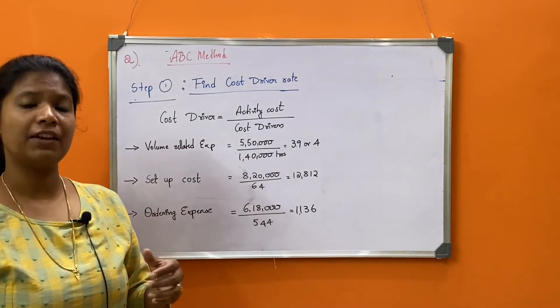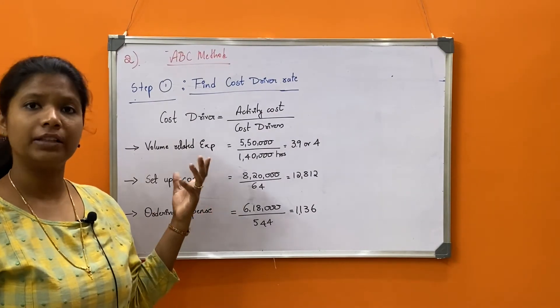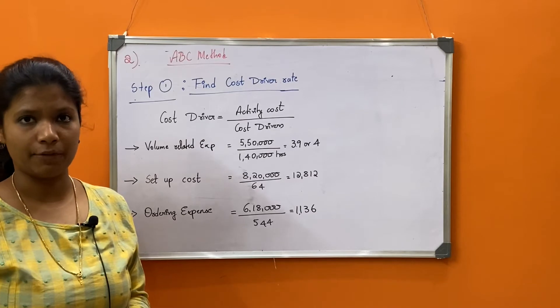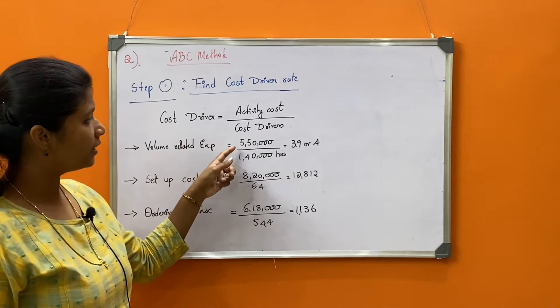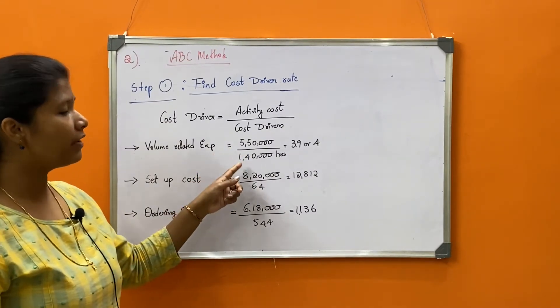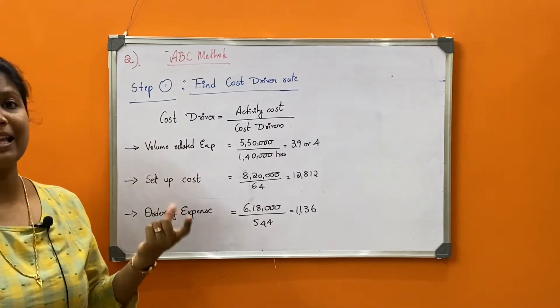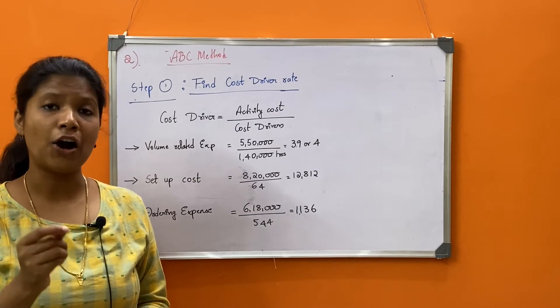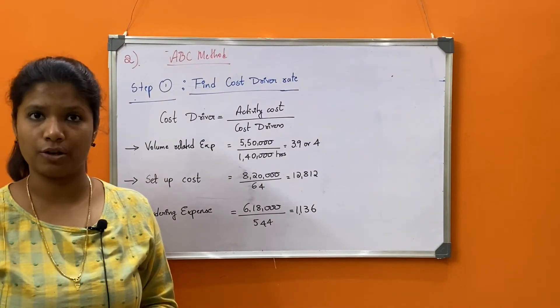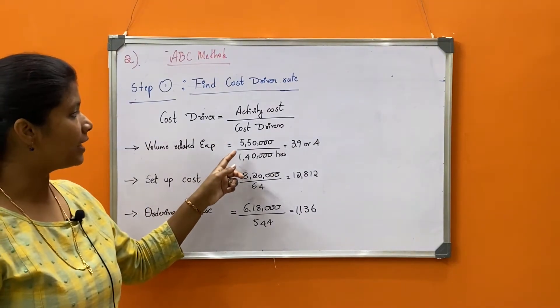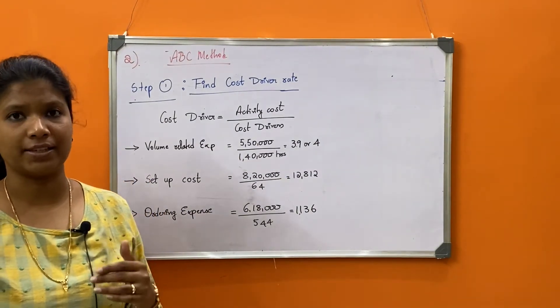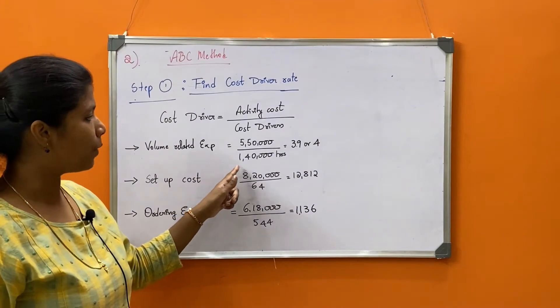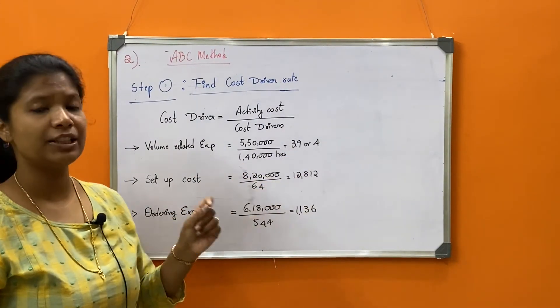Volume related expense is the first activity. The cost is 5,50,000 divided by the cost driver. For volume related expense, we consider how many hours the machine ran. For the production process, we consider 5,50,000 divided by total machine hours. A took 20,000 hours, B took 1,20,000 hours. Put together, total machine hours is 1,40,000. Once we divide that, we get the rate of about 4 rupees.